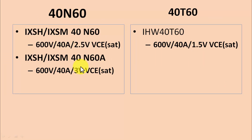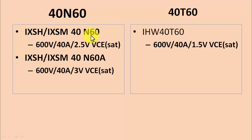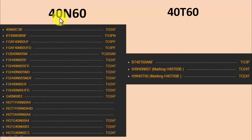The key difference is in VCE saturation — the collector-to-emitter voltage drop during conduction. The 40N60 has 2.5 volt VCE saturation, and the 40N60A variant has 3 volt, but the 40T60 has only 1.5 volt VCE saturation.